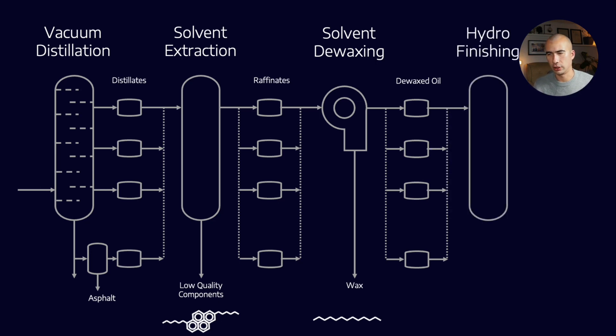We can then move on to the final step in the refining process, which is hydrofinishing, which is basically putting in some hydrogen under a little bit of pressure, and that is going to help break some of the double bonds and saturate those double bonds. At the end of it, what we have is a group 1 base oil.